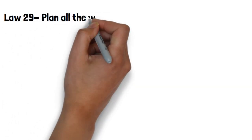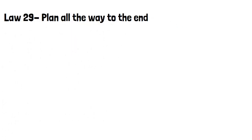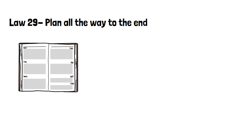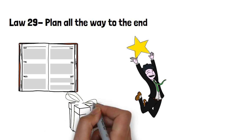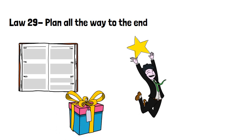Law 29, plan all the way to the end. Always plan until the end. This means thinking about every possibility that could prevent you from attaining your end goal. So you will be able to accommodate any surprises along the way and secure your future. A lot of people are too trapped by their emotions at the moment to see ahead. This will give you the upper hand.